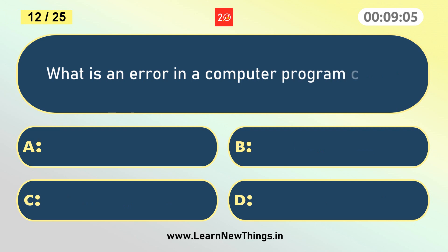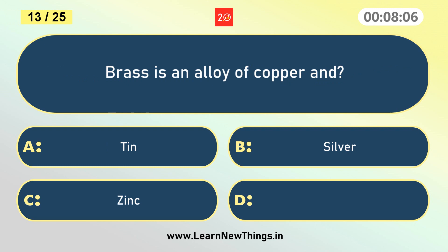What is an error in a computer program called? Bug. Brass is an alloy of copper and zinc.